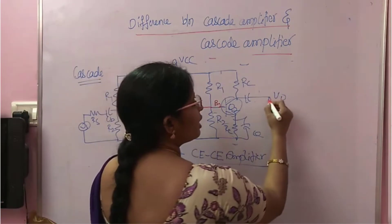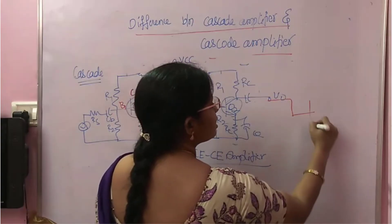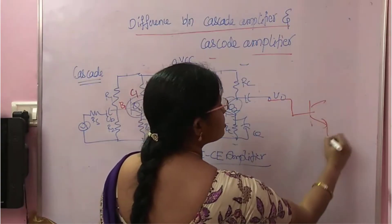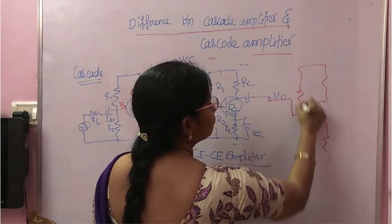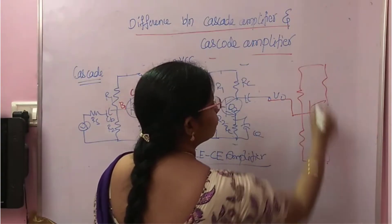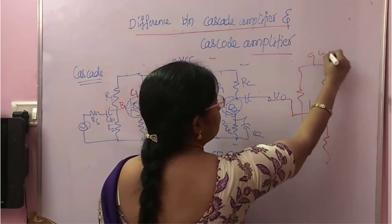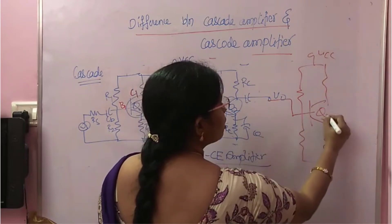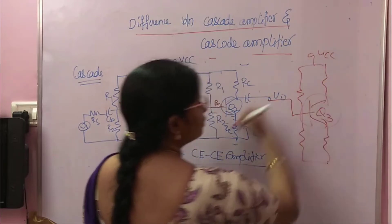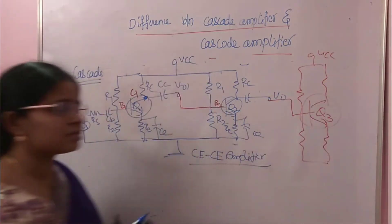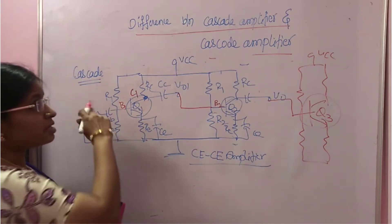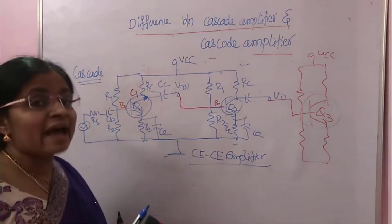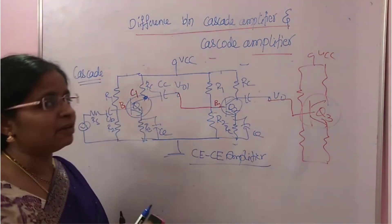Suppose if you connect the third stage, you will connect like this — this is your Q3. So this is called a cascaded amplifier.